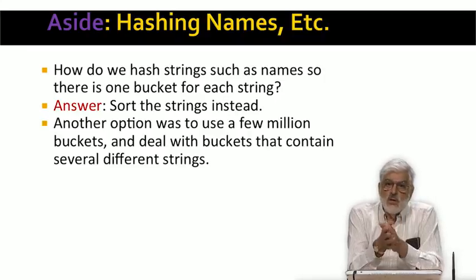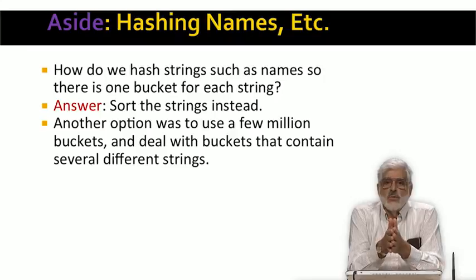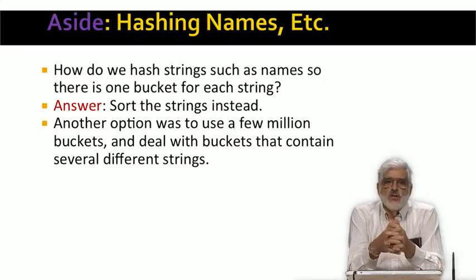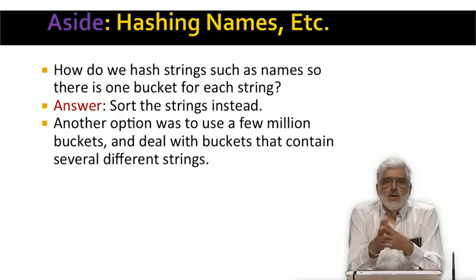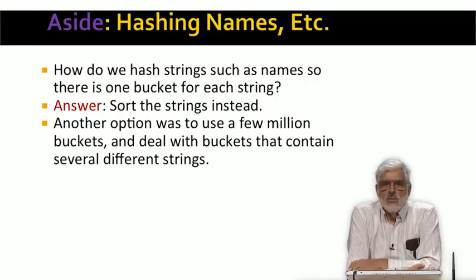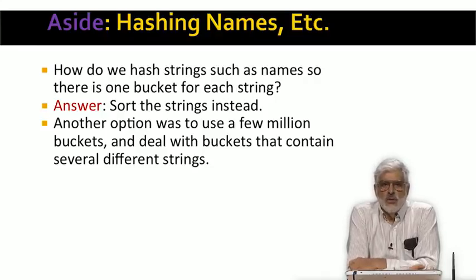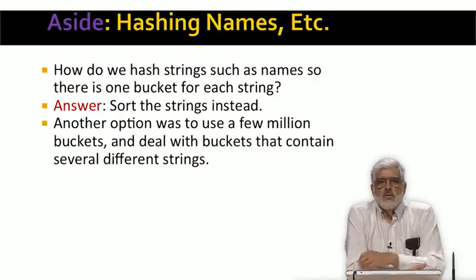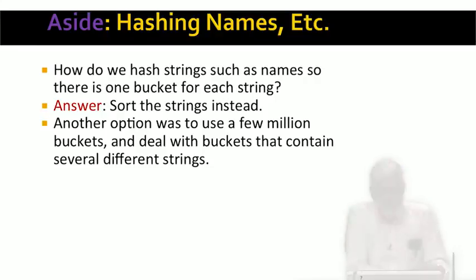Another approach was to follow the strategy we used when we did LSH for signatures. We could hash to say several million buckets and compare all pairs of records within one bucket. That would sometimes cause us to look at pairs of records with different names that happened to hash to the same bucket. But if the number of buckets is much larger than the number of different names that actually appeared in the data, then the probability of collisions like this is very low.